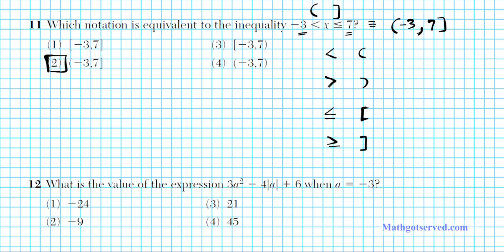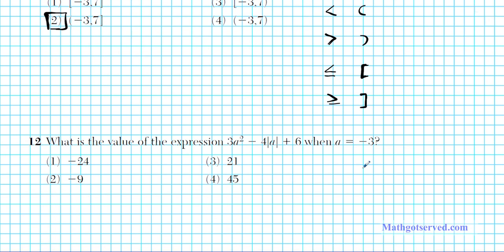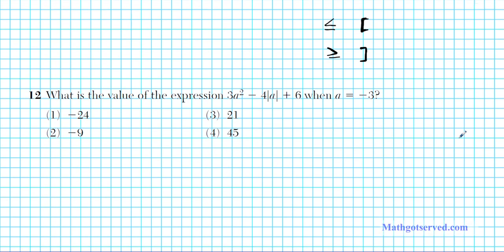Let's move on to number 12. So for number 12 we have an algebraic expression, 3a squared minus 4 times the absolute value of a plus 6. And you have to evaluate this when a is equal to negative 3. Let's go ahead and do this problem.